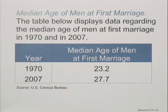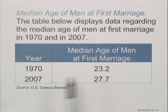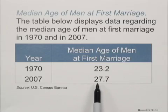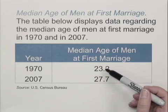The table below displays data regarding the median age of men at first marriage in 1970 and in 2007. In 1970, the median age of men at first marriage was 23.2. In 2007, it's 27.7. So even before you answer the question, you can see the median age is rising.